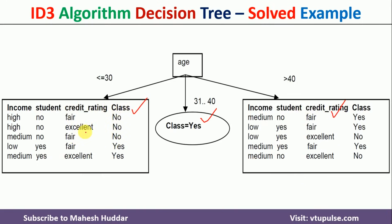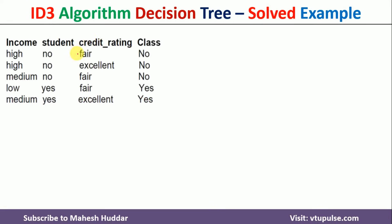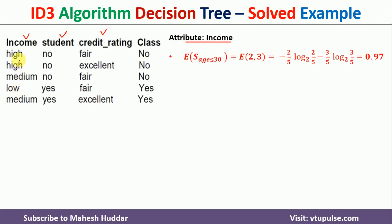We first consider the left side — the subset for age less than or equal to 30. Here we have 3 no and 2 yes examples, so the entropy of this subset is: minus 2/5 log(2/5) base 2, minus 3/5 log(3/5) base 2, which equals 0.97. We have three remaining attributes: income, student, and credit rating.